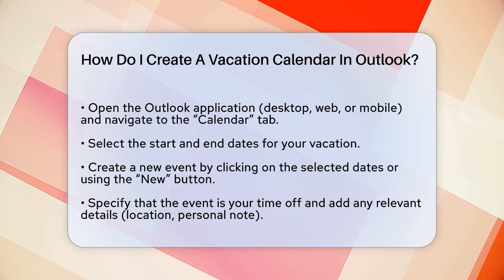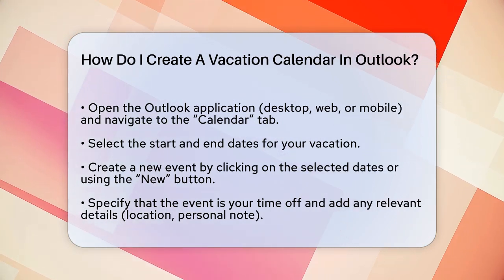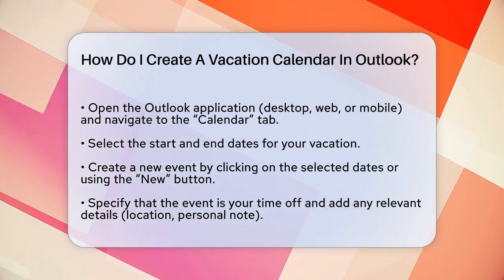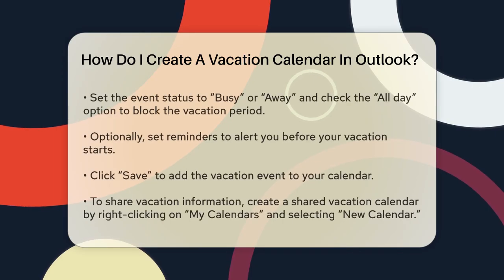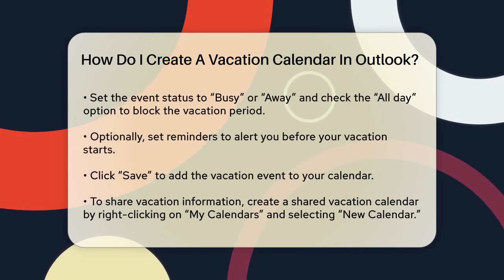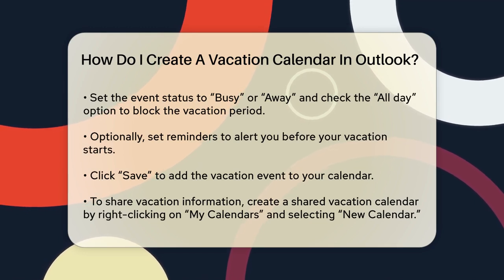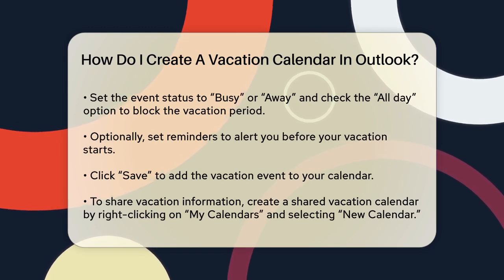In the event details, specify that it's your time off and add any additional information you want to include, like the location or a personal note. To let your colleagues know you'll be away, set the event as Busy or Away and check the All Day option. This will block the entire vacation period on your calendar and signal to others that you're unavailable.